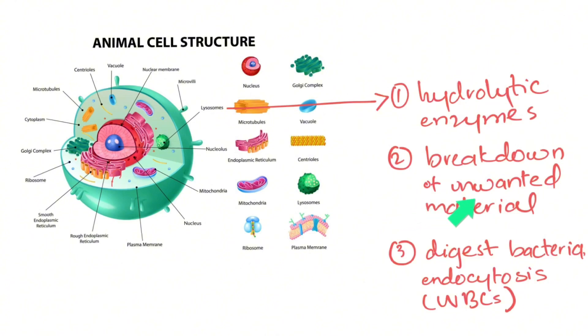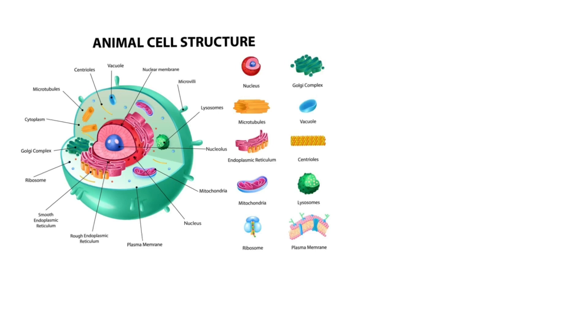In white blood cells, they are used to digest bacteria through endocytosis. So this was an overview of cell structure and function.